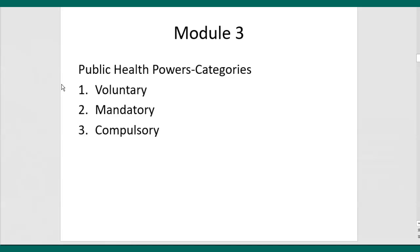Public health powers basically fall into one of three categories: voluntary, mandatory, and compulsory. The severity of the exercise of power increases as we go from one to three, and legal scrutiny on those powers and the ability of government to exercise them also increases as we go from voluntary to compulsory.